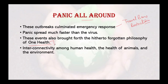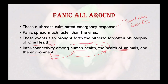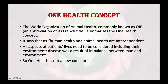The idea of One Health recognizes an interconnectivity among human health, animal health, and the environment. If your environment is not good, it will affect human health as well as animal health. If the health of animals is not up to the mark, it will affect human health and the environment, and vice versa.